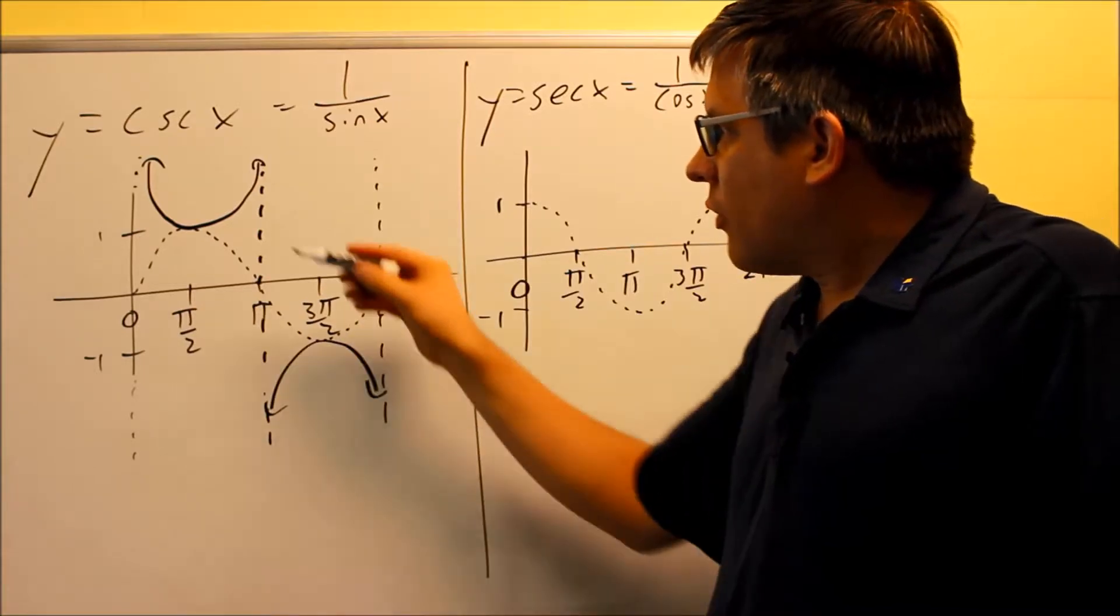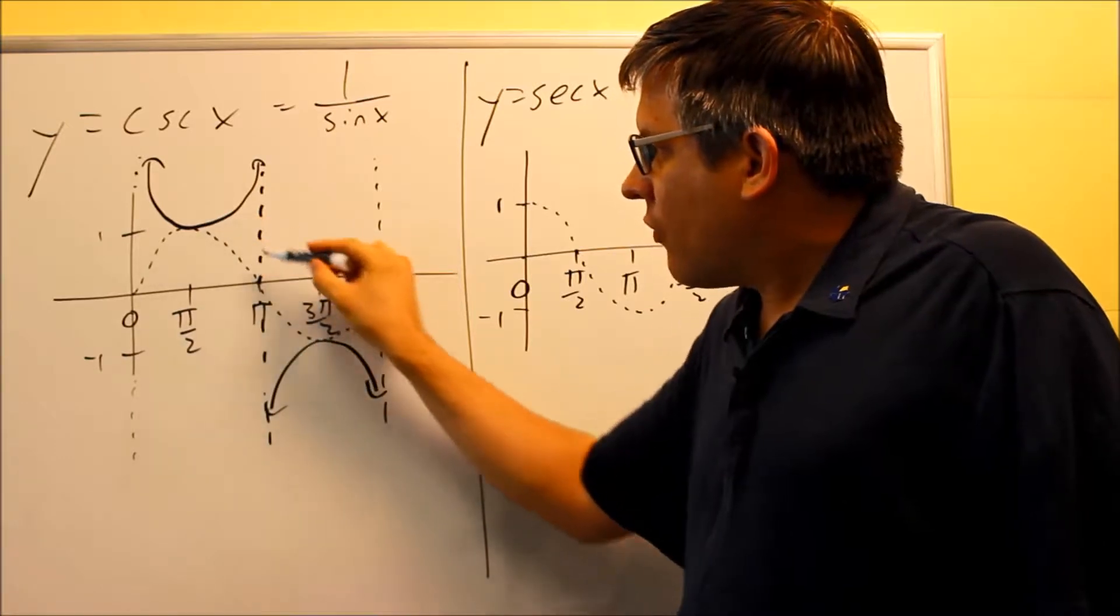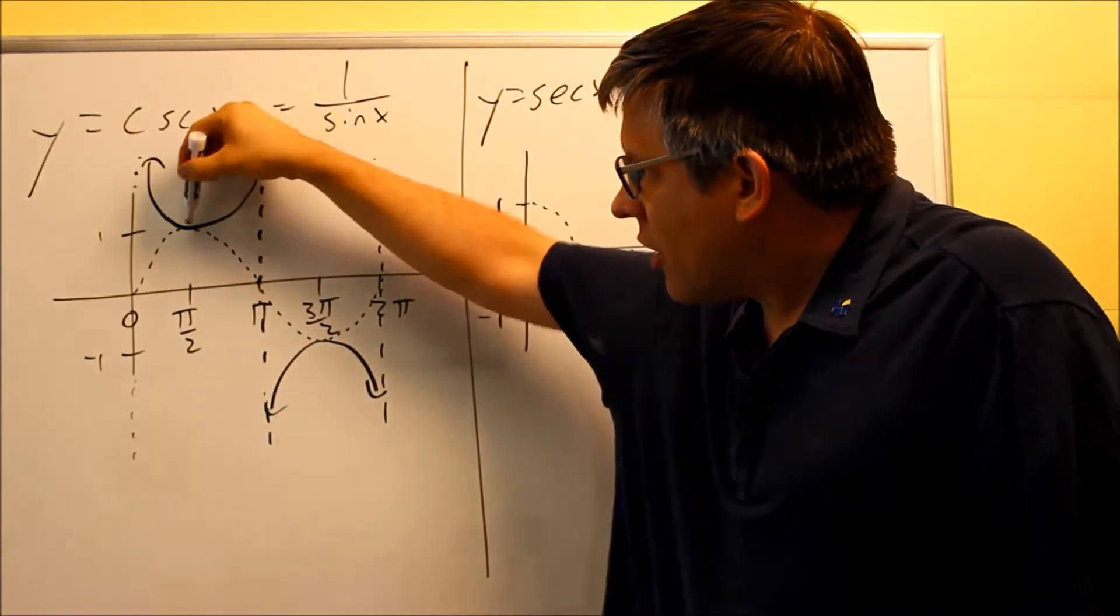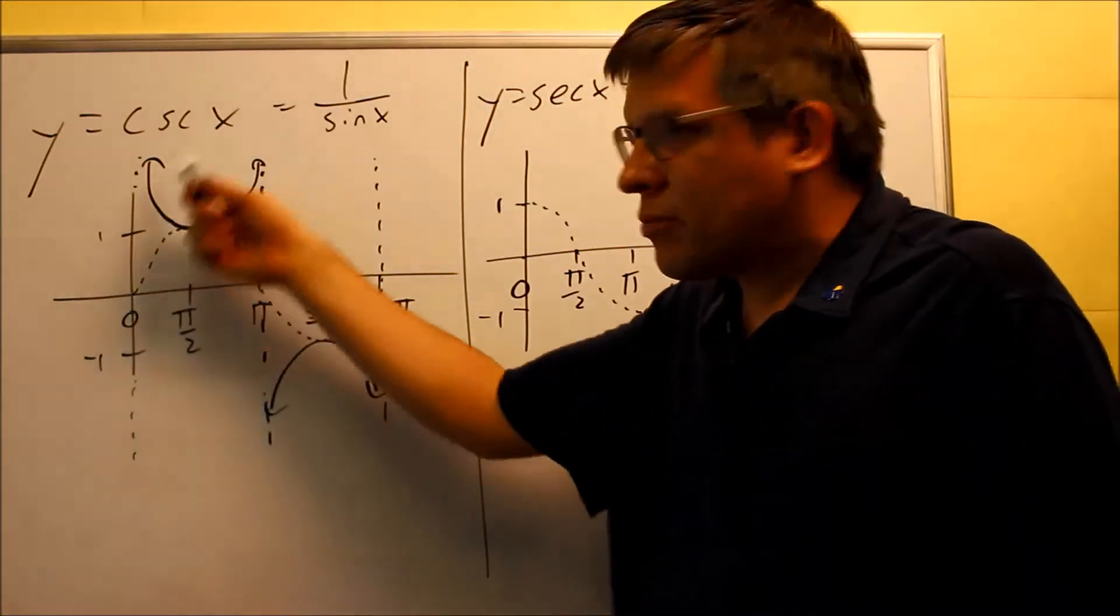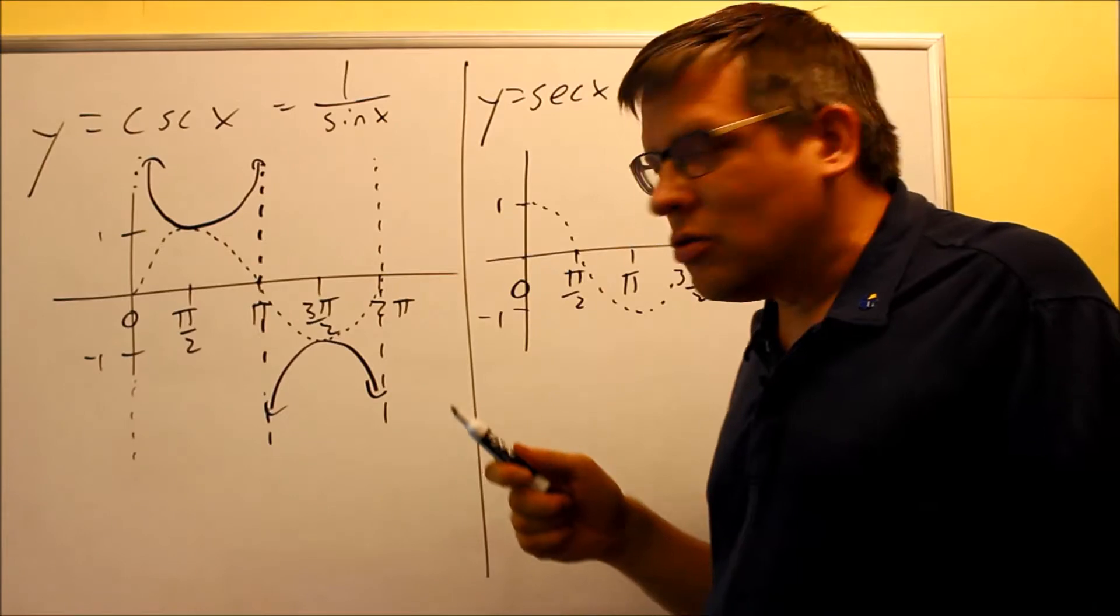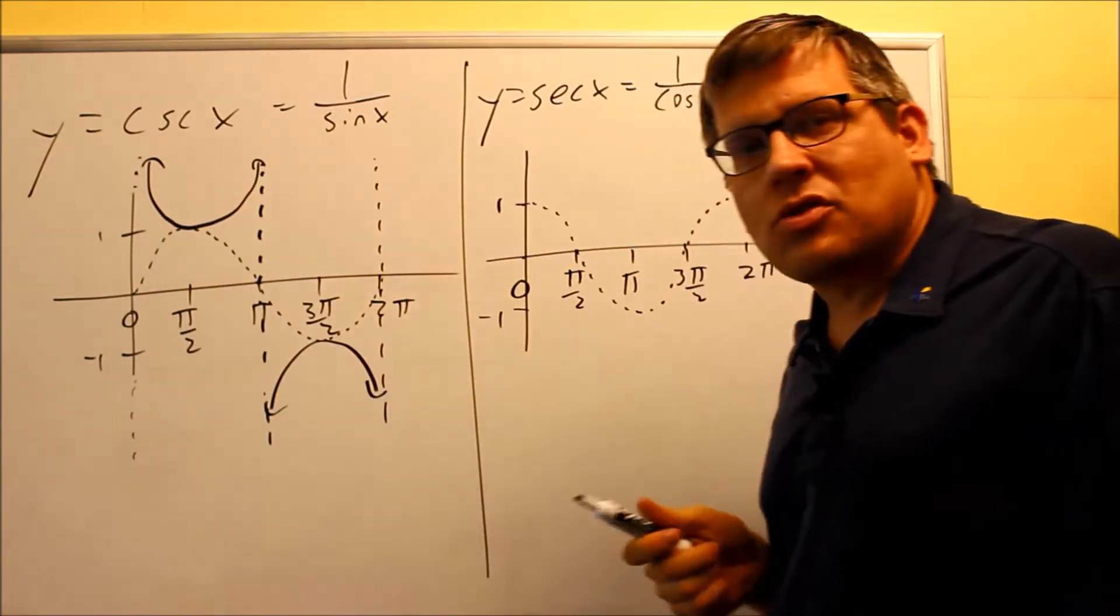So basically, however far up or down the cosecant goes, that's where the sine graph crosses there, that's where the cosecant will come down and touch right there. So if the sine graph went up to 2, for instance, that means that this would come down and touch that at 2 or at negative 2 here. So this is what your cosecant looks like, these solid pieces there.